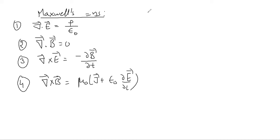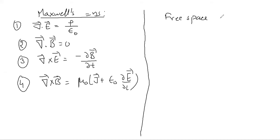Now we are going to talk about electromagnetic waves in free space. We'll do a proper derivation to prove that EM waves are transverse in nature and that they travel with the speed of light — first for vacuum, and then we'll apply those results to other media. Free space or vacuum means a space free of all charges and currents.